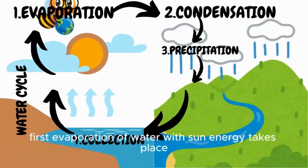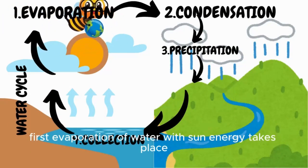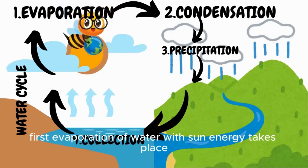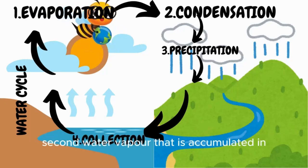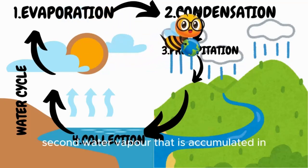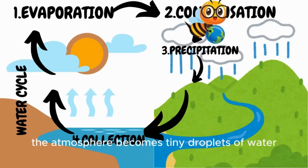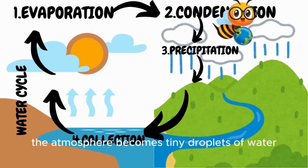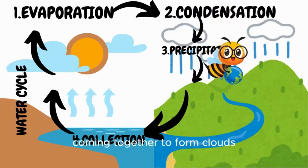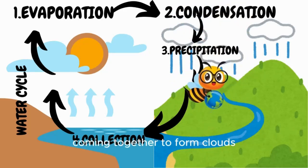First, evaporation of water with sun energy takes place. Second, water vapor that is accumulated in the atmosphere becomes tiny droplets of water, coming together to form clouds.